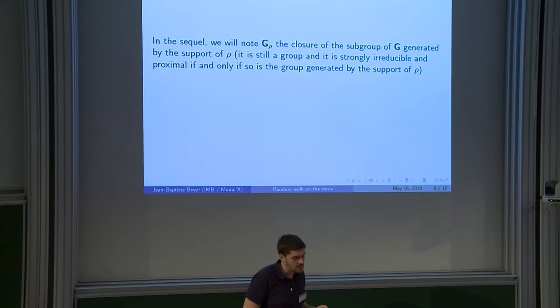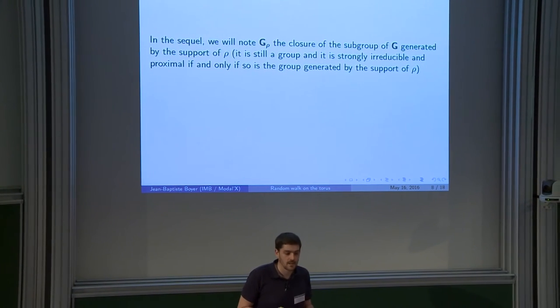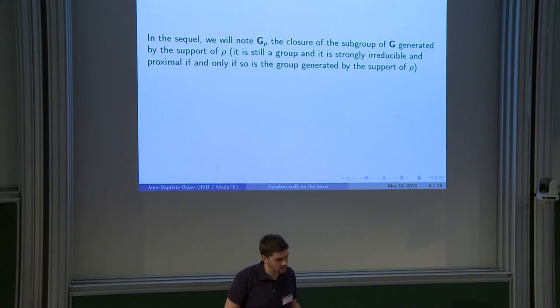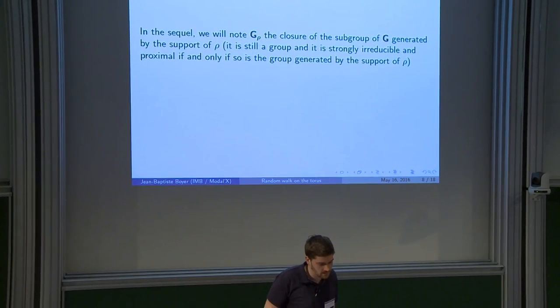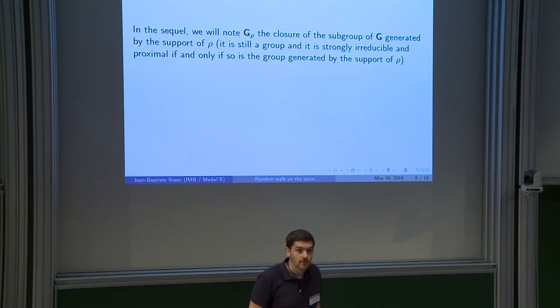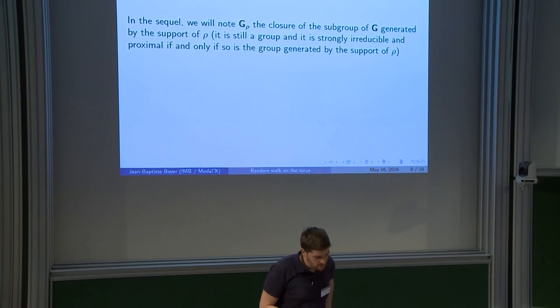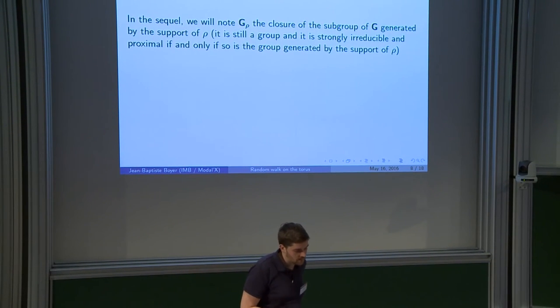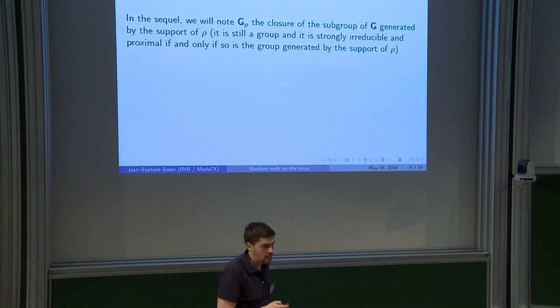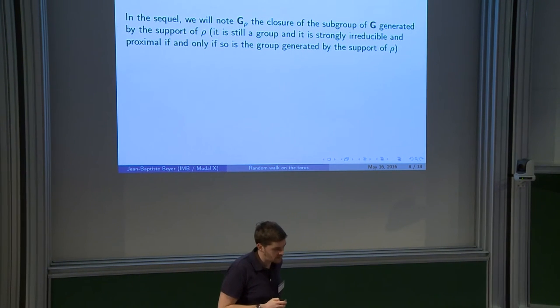So in the sequel, I will note G the closure of the subgroup generated by the support of ρ. And it's still a group and it is strongly irreducible and proximal if and only if so is the group generated by the support of ρ. And actually, I could also look at the semi-group or things like that.